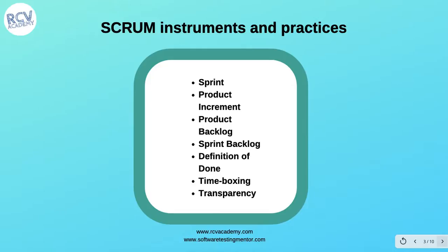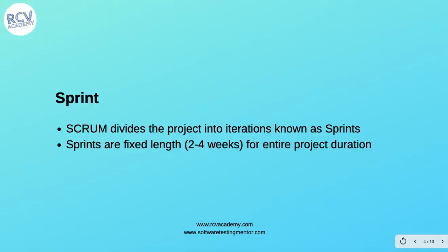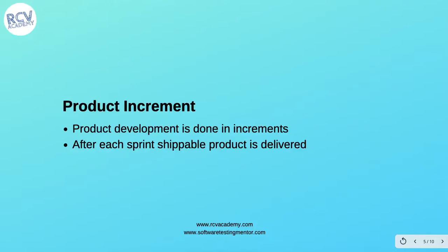What is a sprint in Scrum? Scrum divides the project into iterations known as sprints. Iterations in Scrum are known as sprints, and these sprints are time-boxed iterations. Sprints are fixed length of two to four weeks for the entire project duration. Any iteration in Scrum is known as a sprint, which is a time-boxed cycle of two to four weeks, depending on the agreement within the project.